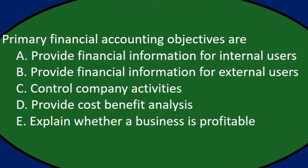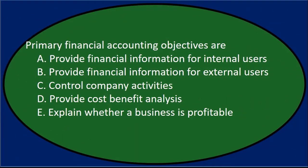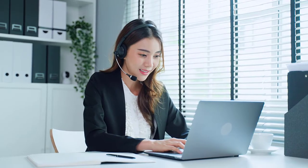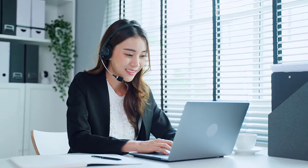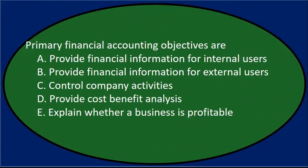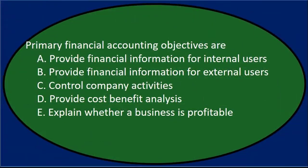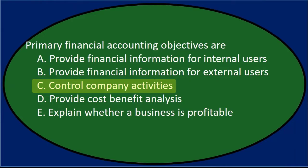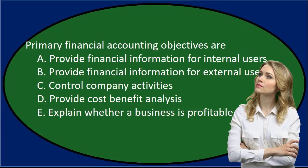So all the rules we think about really are for the external users. Note, however, we will be using a lot of the same information when running internal reports. You may have thought that A — provide financial information for internal users — was correct, and that's common. But the internal users are not required to follow all the externally accepted accounting principles, although they may do so. They're not really required to because internal users can manipulate the reports in whatever way they want.